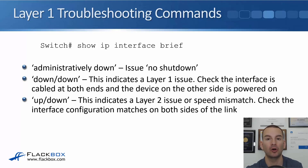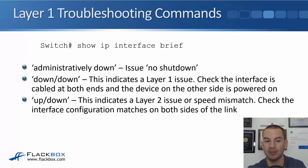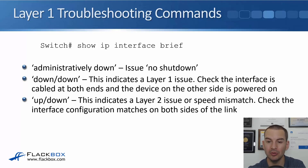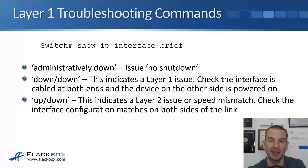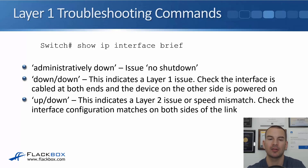If the interface shows down down, check that it is cabled in at both ends and the device on the other side is powered on. If the device on the other side is powered off, or the cable isn't securely connected on both sides, the interface will show as down down. If the status shows up down, that typically indicates a layer 2 issue or a speed mismatch, so check that the interface configuration is the same on both sides of the link. A common issue would be different VLAN settings on both sides.